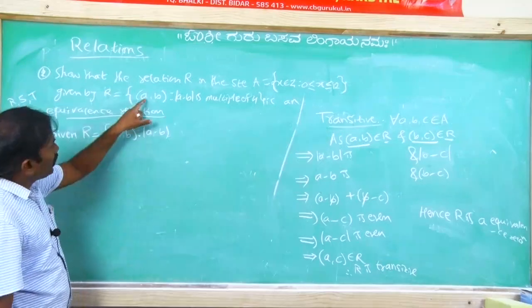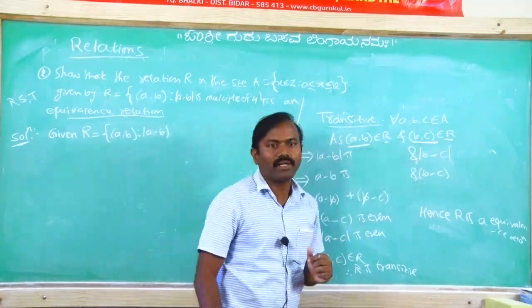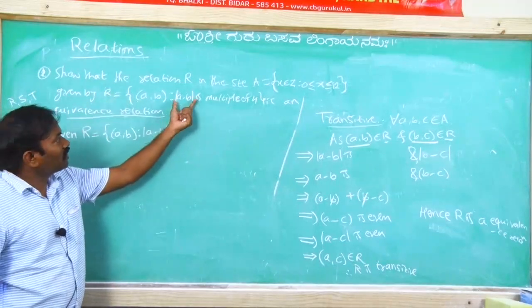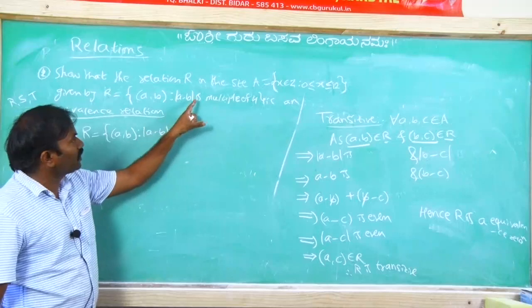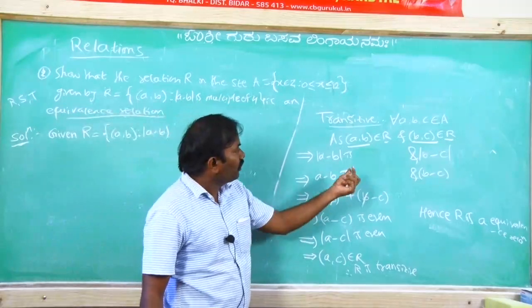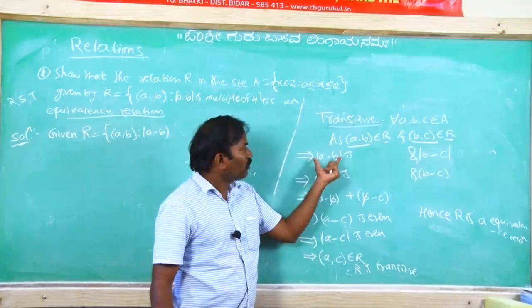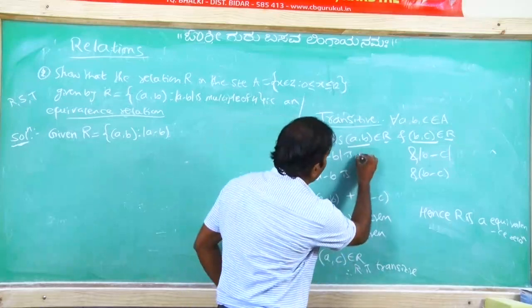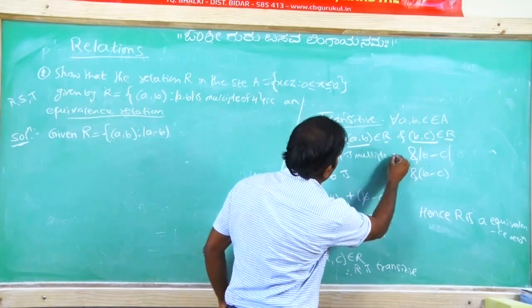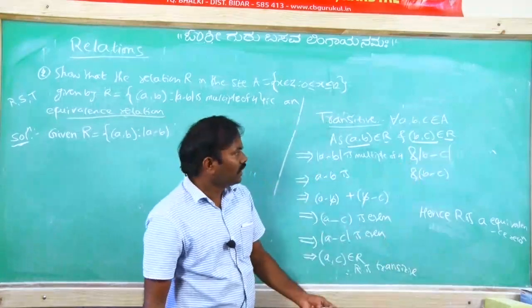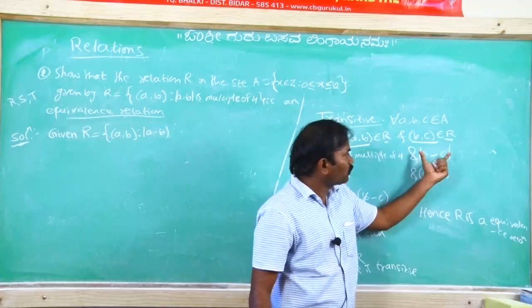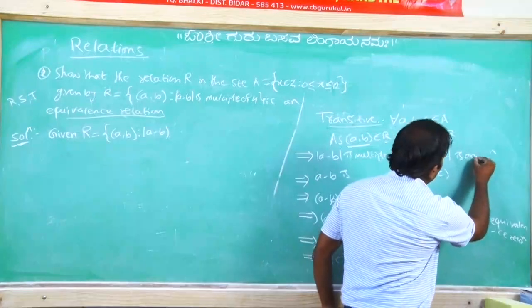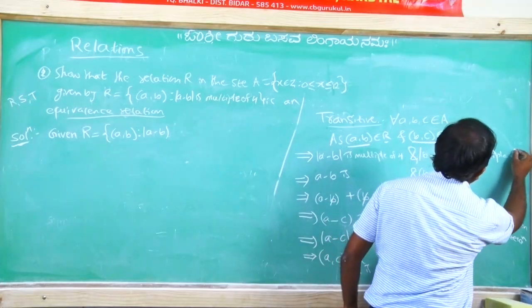Next, apply this relation on the first pair and second pair. What is the given relation? Any pair belongs to the relation only when the modulus of the first element minus the second element is a multiple of 4. So ordered pair (A, B) belongs to R means |A - B| is a multiple of 4. Similarly, ordered pair (B, C) belongs to R means |B - C| is a multiple of 4.